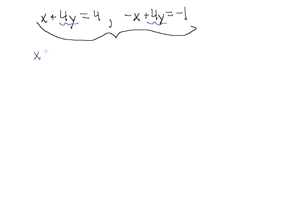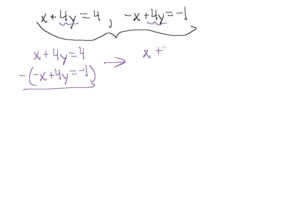Let's write the first equation: x plus 4y equals 4. We want to add the opposite of the second equation, so we subtract it. We distribute the minus sign into the second equation — since I prefer adding the opposite rather than subtracting directly. Distributing gives us: positive x, minus 4y, and positive 1.